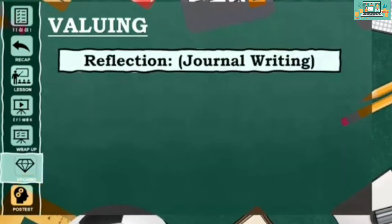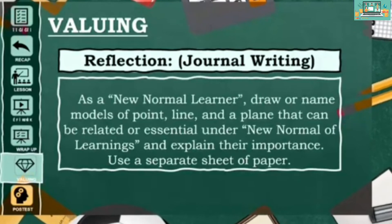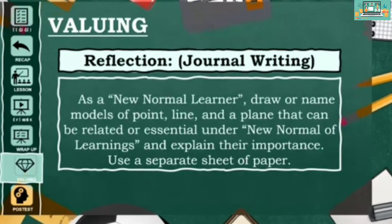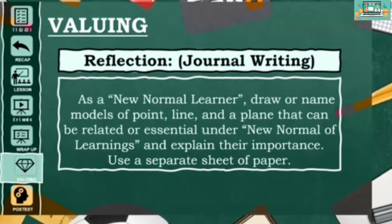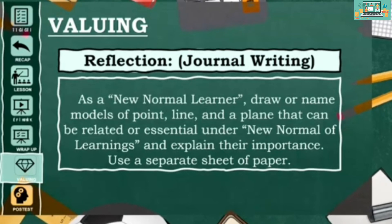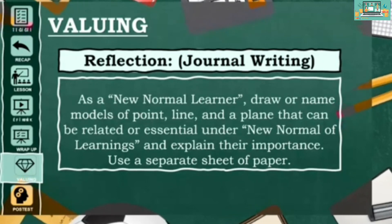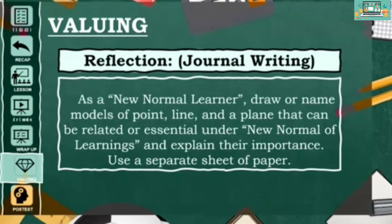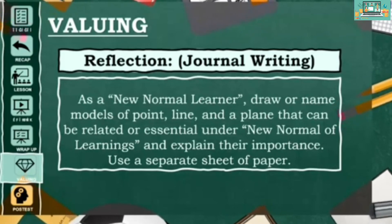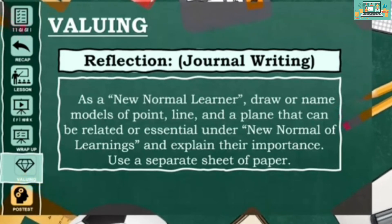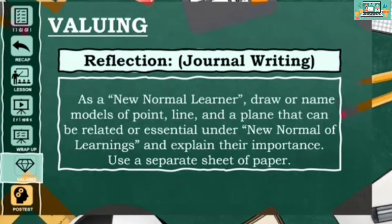For your journal writing as a new normal learner, draw or name models of point, line, and plane that can be related or essential in your daily learnings. Explain their importance. You may use a separate sheet of paper in writing your journal.